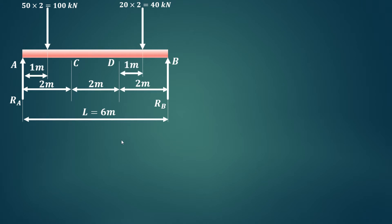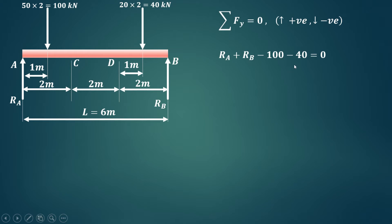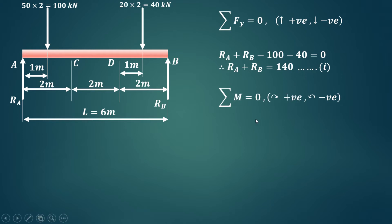Each point load acts at the center of its respective UDL, so each is located 1 meter from the edges of the loaded region. We now apply the conditions of equilibrium. The first condition is summation of Fy equals zero. Upward forces are positive and downward forces are negative. RA and RB act upward (positive), while the 100 kilonewton and 40 kilonewton loads act downward, giving RA plus RB equals 140 kilonewton.